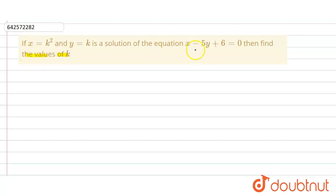So the given linear equation is x minus 5y plus 6 equals 0. Here this point in which x coordinate is k² and y coordinate is k is the solution of the equation. So this point will satisfy this given linear equation.